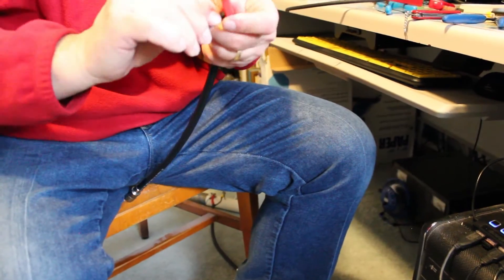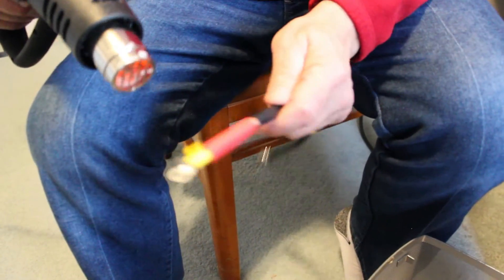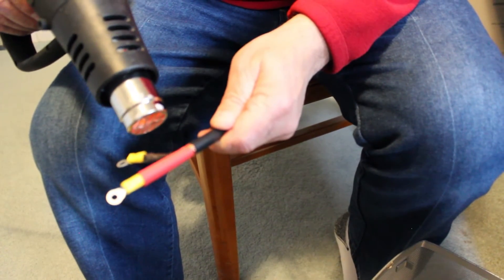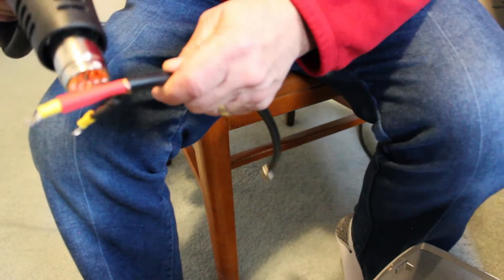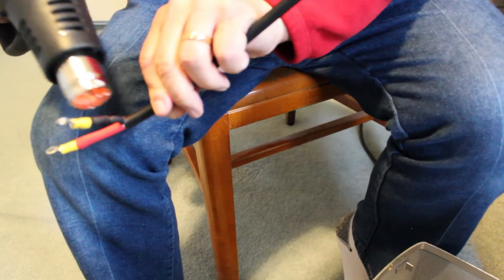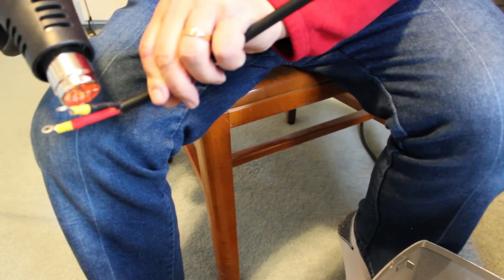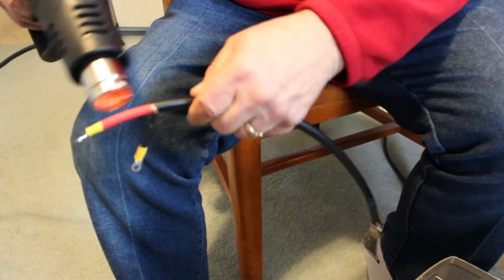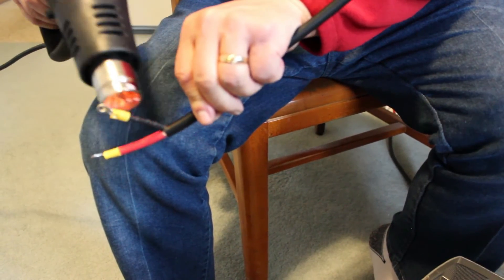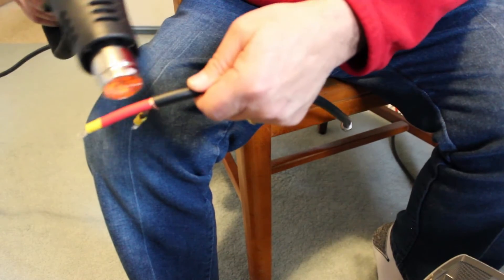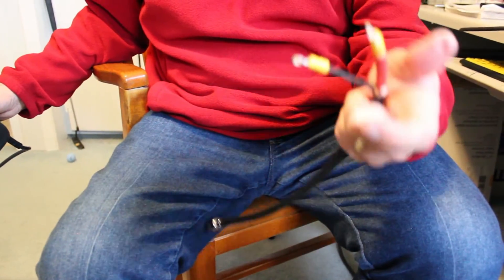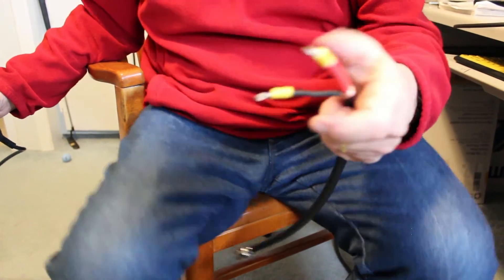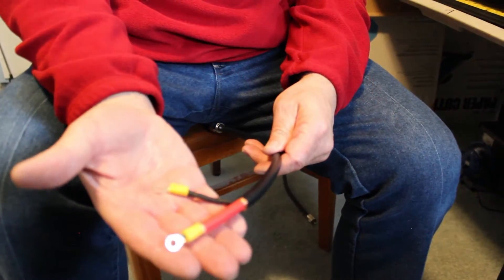Now I'm going to shrink these down with my handy dandy little shrink gun. Now you've got shrink tube on there and that will protect it from some moisture. The shrink tube is on now.